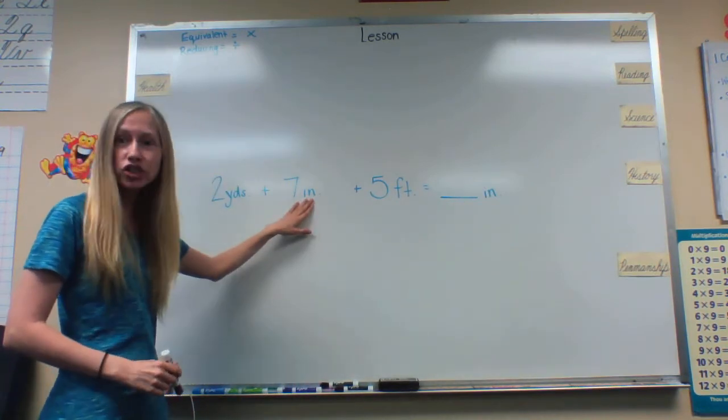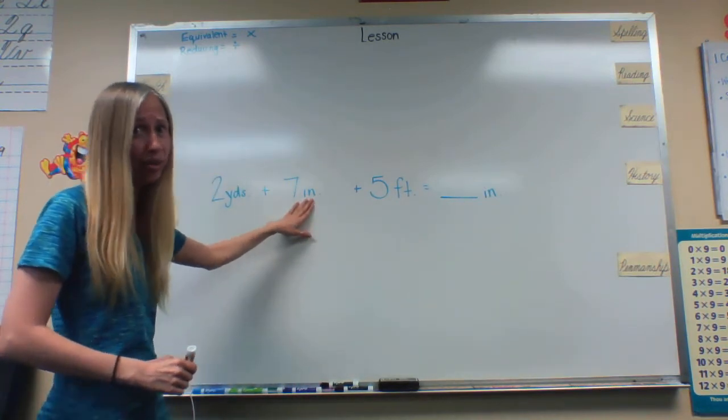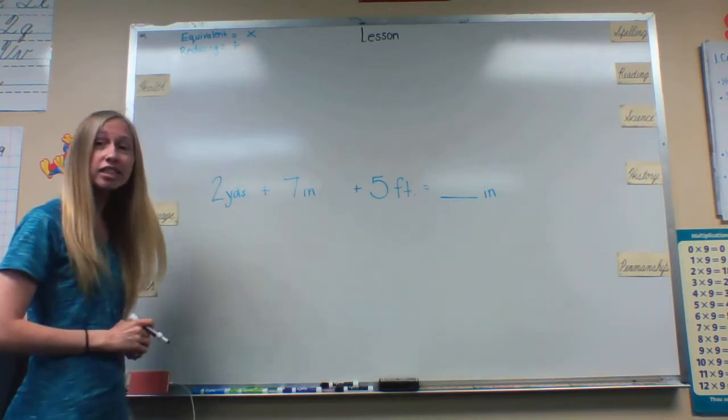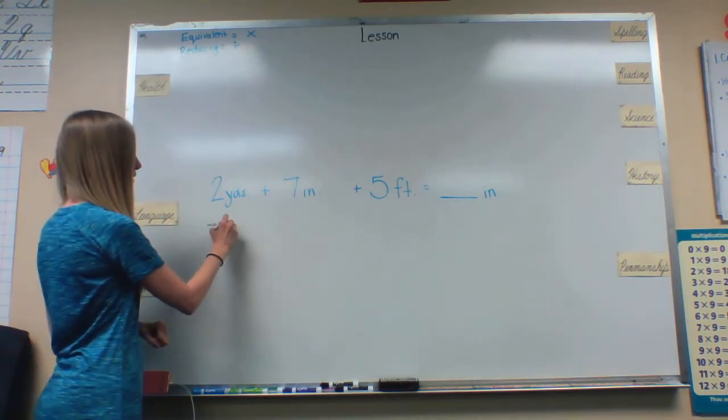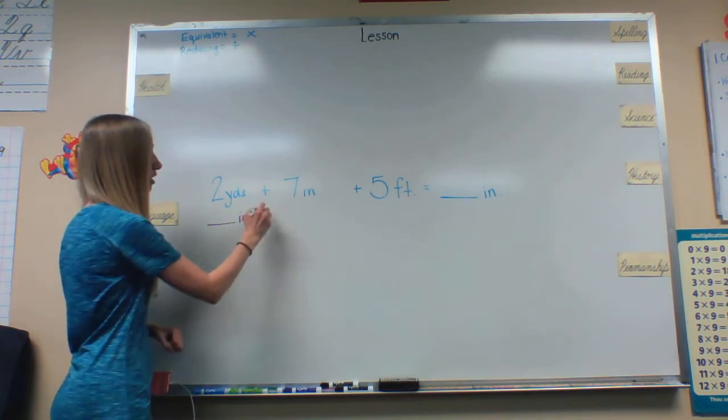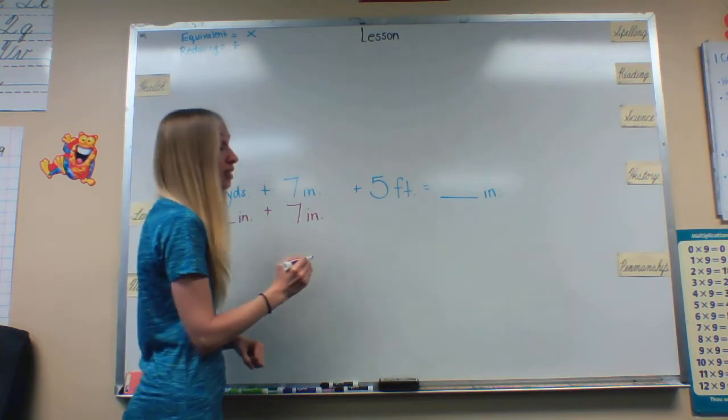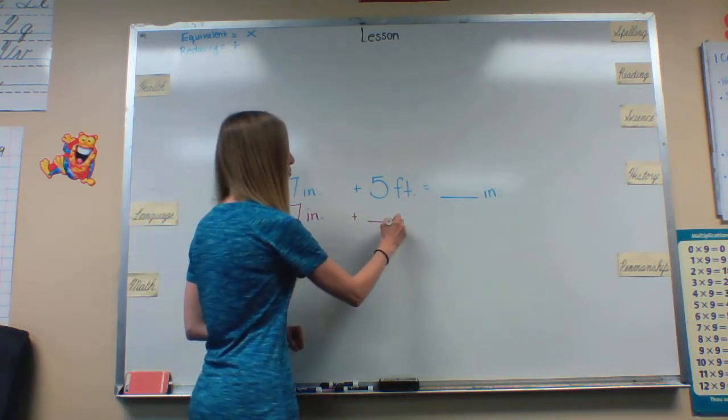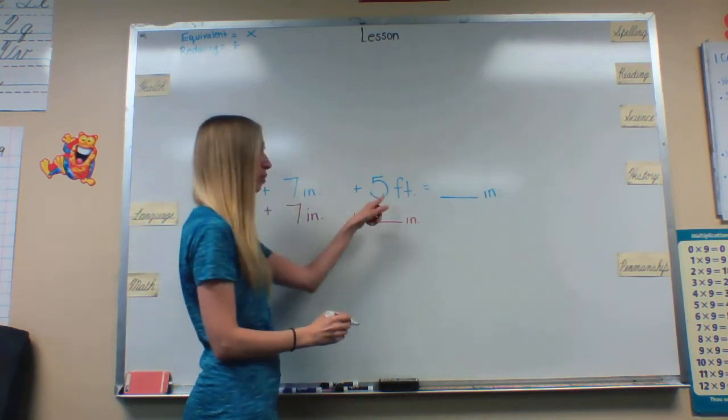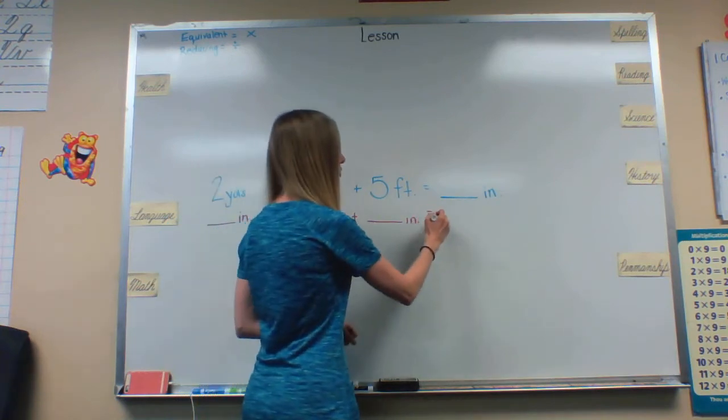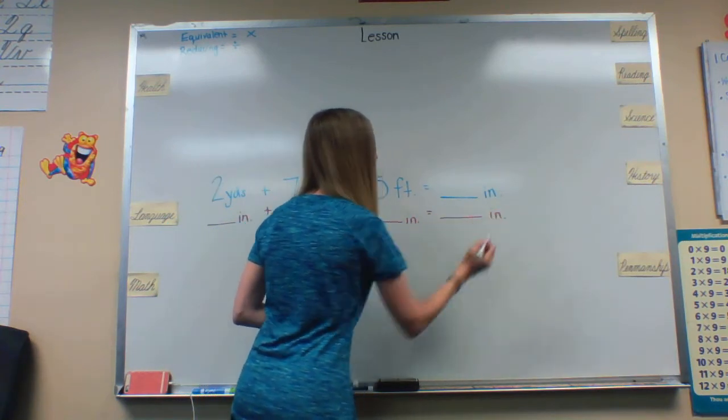This is already in inches so we're not going to do anything with that. But two yards needs to be turned into inches so we're going to write underneath it blank inches plus seven inches because it's already in inches plus blank inches because we want our five feet also in inches equals blank inches.